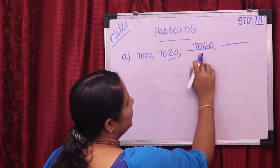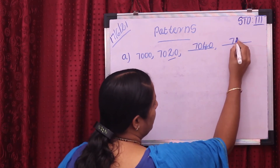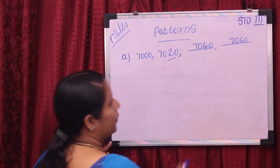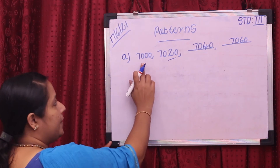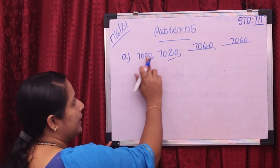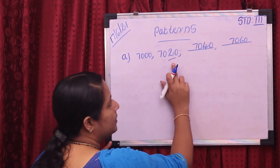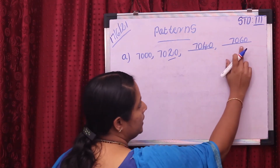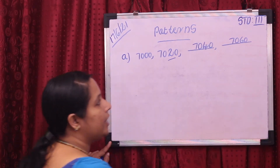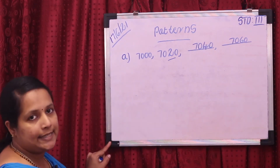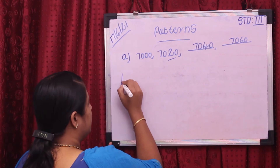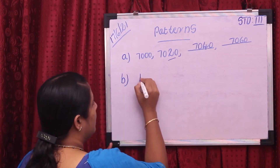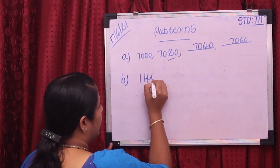The next 20 difference is 7,060. So the pattern is: 7,000, 7,020, 7,040, 7,060. Then our next pattern starts with 1,400.